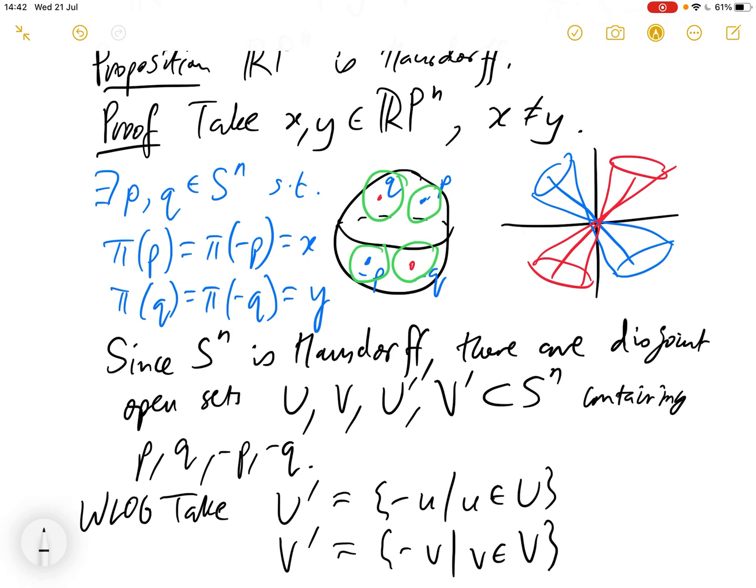so if we take these sets around, so this is U around P, and this is U' around minus P, and these are now mirror images of each other, since we're taking U' to be the set of minus U, where U is in U.